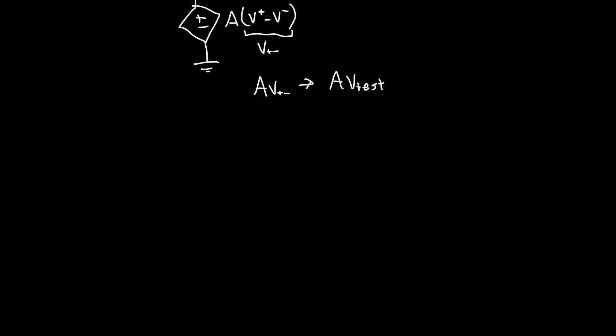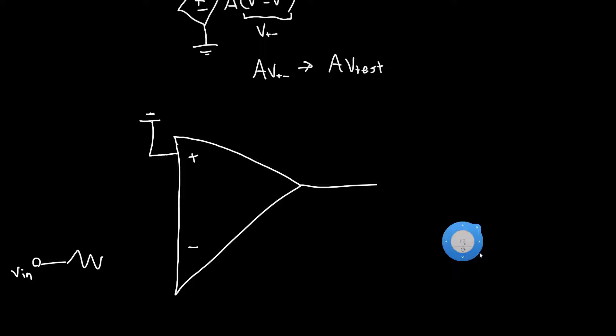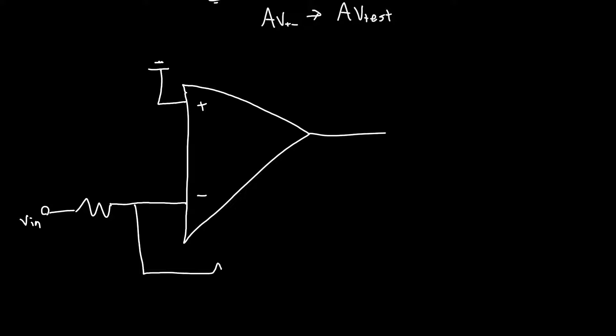We've got V plus minus, which we need to replace with an independent source of some value A V test. Let's do that. First let's redraw the op amp a little larger so we can fit some stuff inside it. Plus minus, and then we have our input voltage VN. Since this is an inverting op amp, we had a resistive feedback network like so. Inside this op amp, the ideal op amp model is just a dependent voltage source A V plus minus, which is just shorthand for V plus minus V minus.